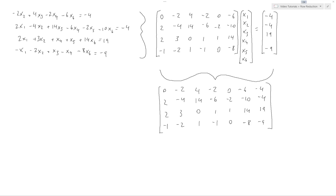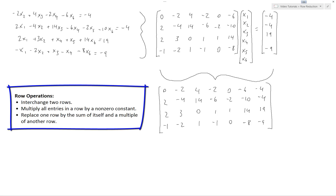The three row operations are shown here. We can interchange two rows of the augmented matrix. We can multiply all the entries in a row by a non-zero constant. And we can replace one row by the sum of itself and a multiple of another row.